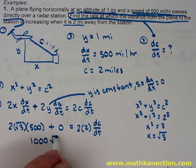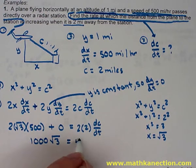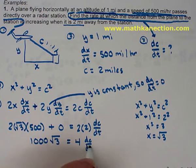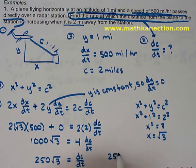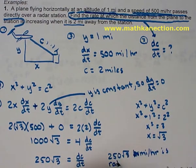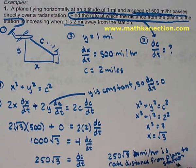So we have 1,000 square root of 3 is equal to 4 dc/dt. So dc/dt is equal to 250 square roots of 3. So the question to find the rate at which the distance from the plane to the station is increasing, 250 square root of 3 miles per hour is the rate that the distance from the plane to the station is increasing.